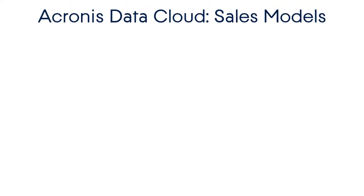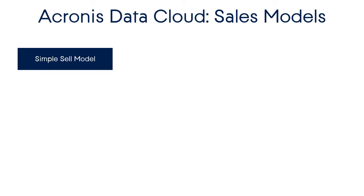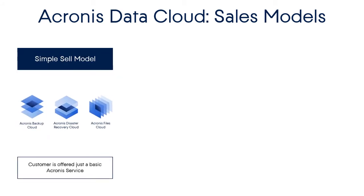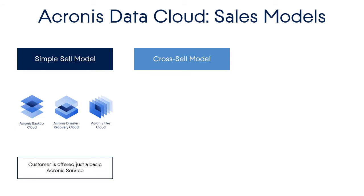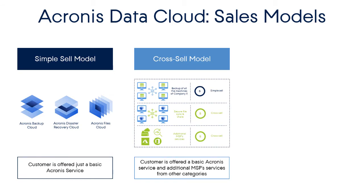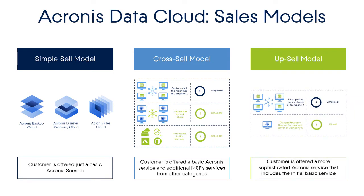The Acronis Data Cloud supports three sales models that can beneficially be used by service providers of any size and maturity level. The first model is called the simple sell model — it implies that the customer is offered just a simple basic Acronis service. In the case of the cross-sell model, the customer is offered not only a basic Acronis service, but also some additional MSP services from other categories. Finally, the upsell model implies that the customer is offered a more sophisticated Acronis service that includes the initial basic service. Let's have a look at each of these models.